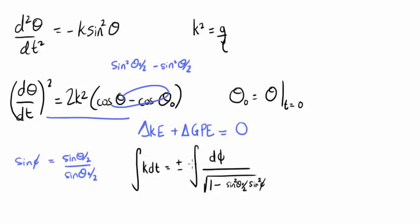The plus or minus sign depends on whether the velocity is positive or negative. Integrals of this type are known as elliptic integrals. Elliptic integrals cannot be computed in terms of elementary functions. However, it turns out that for small values of phi, we can approximate.